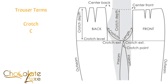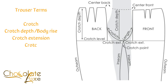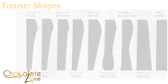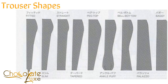I'm going to briefly explain terminologies. In the trouser block you have the crotch, which is the crotch area of your body. You have the crotch depth, also called the body rise, measured from your waist to the crotch. You have the crotch extension, which goes underneath the crotch to give you ease, the crotch points, and the crotch level. The outseam is the waist to floor, and the inseam is inwards from the crotch downwards.